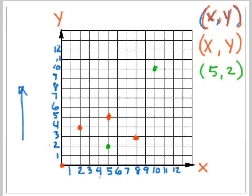How about this one? That's way out there. Let's see, it's on the 10 for the x. So that would be a 10. And then, ooh, 10 right here. So that would be an ordered pair of 10, 10.